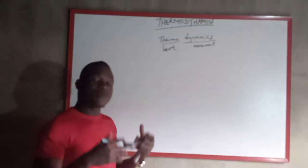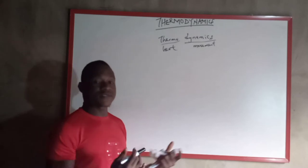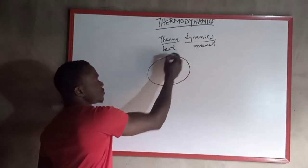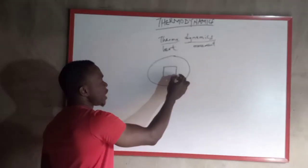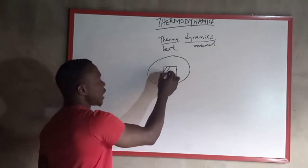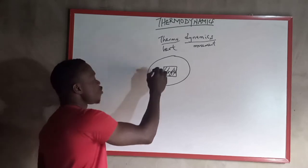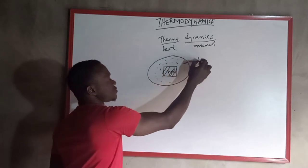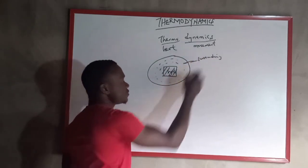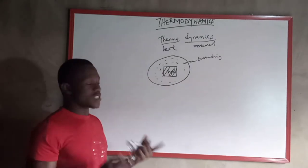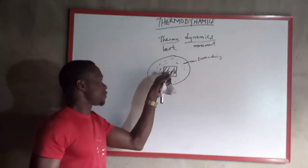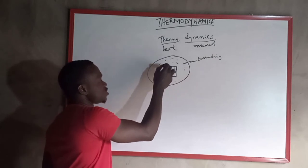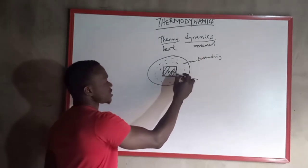The system may be an open system, a closed system, or an isolated system. What is a system? A system is the area under consideration. For instance, we have the earth's crust and we have a particular body we are considering — that body becomes our system, while the rest of the earth's crust that we don't consider becomes the surrounding. The surface of the system that makes contact with the surrounding is known as the boundary.